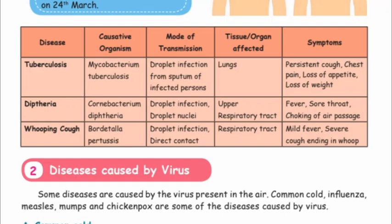Diphtheria: causative organism is Corynebacterium diphtheriae, mode of transmission is droplet infection and droplet nuclei. The organ affected is the upper respiratory tract. Symptoms include fever, sore throat and choking of the air passage.